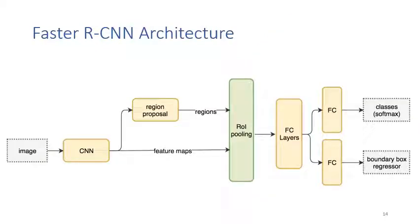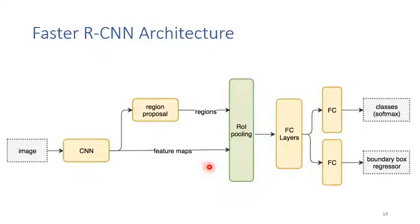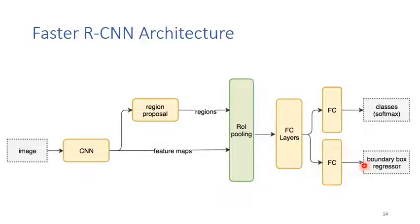This is the architecture of Faster RCNN. First, we extract features using CNN, then pass the features to the region proposal network, which predicts the regions of the object candidates. The same features are passed to the ROI pooling layer, which receives both region inputs and feature maps. Finally, the output passes through several fully connected layers, and then is used to predict the object classes and the bounding box size.